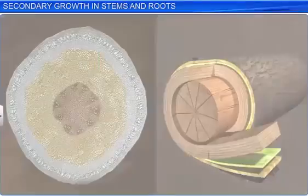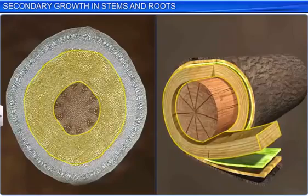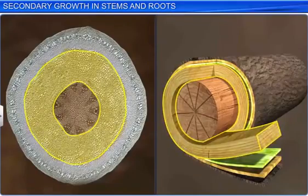The peripheral region of the secondary xylem, which is lighter in color and is involved in conduction of water and minerals, is called sapwood.